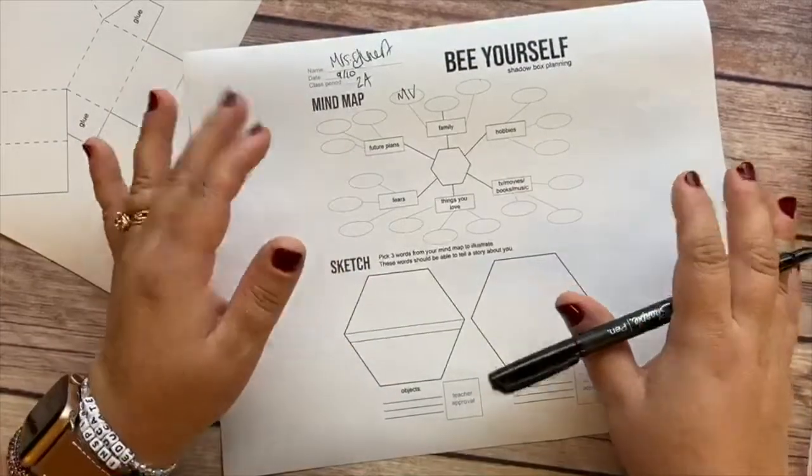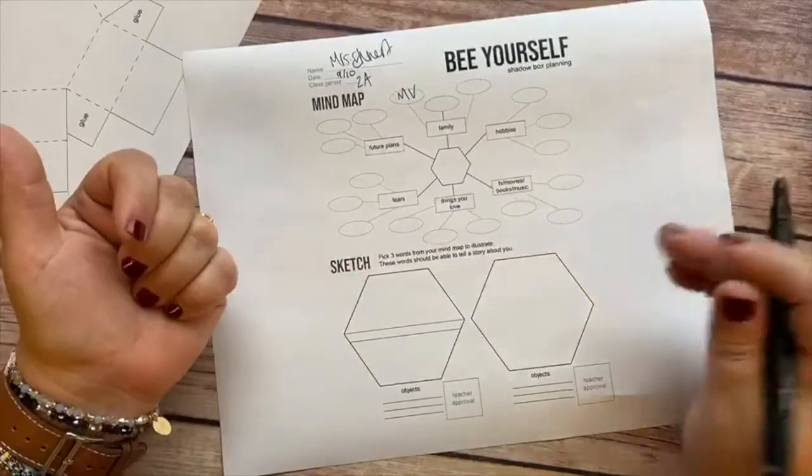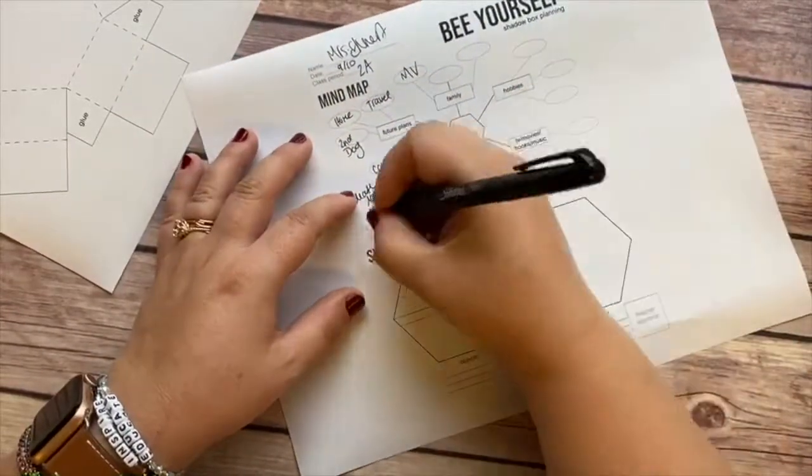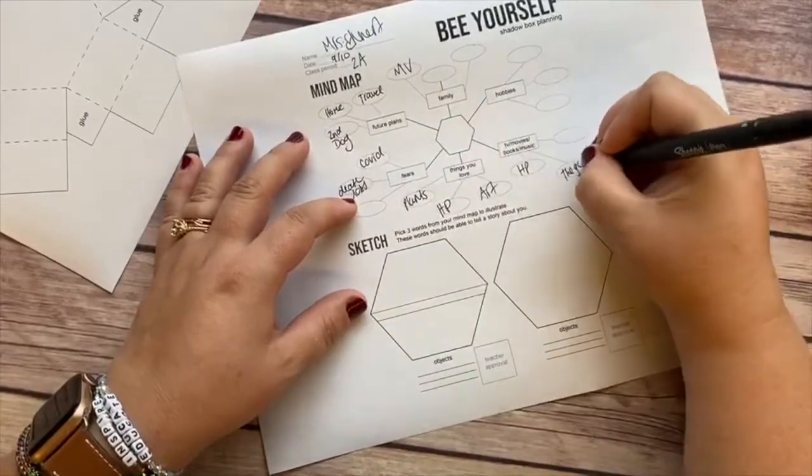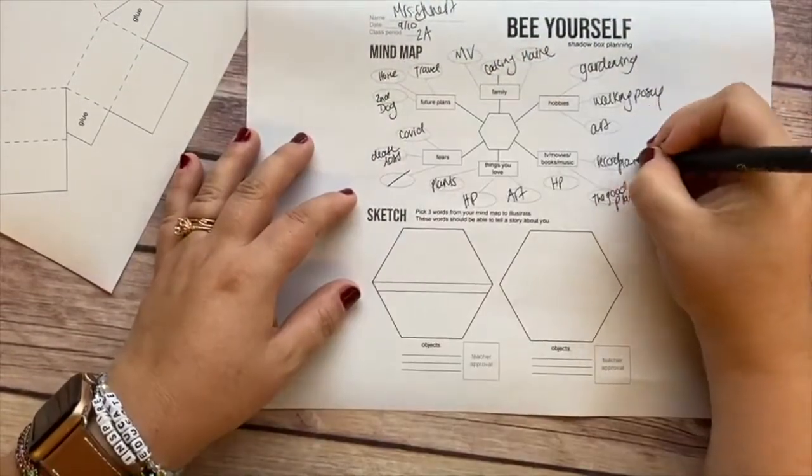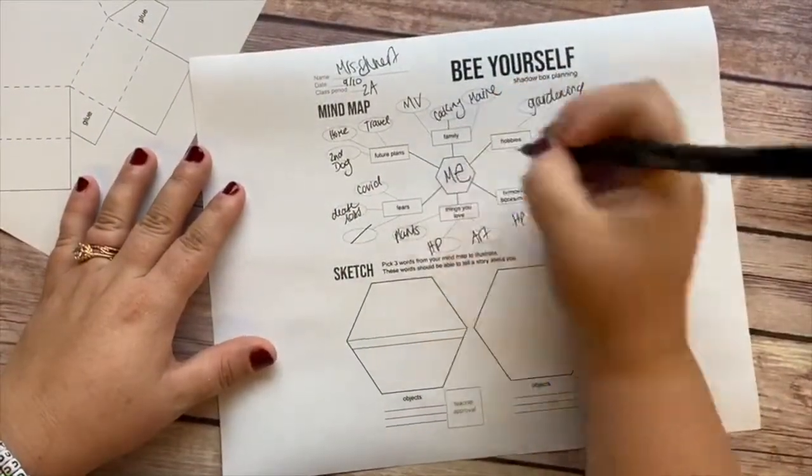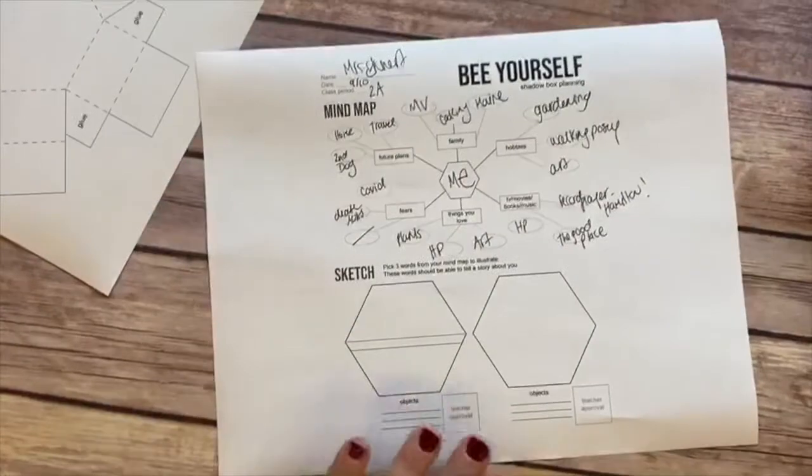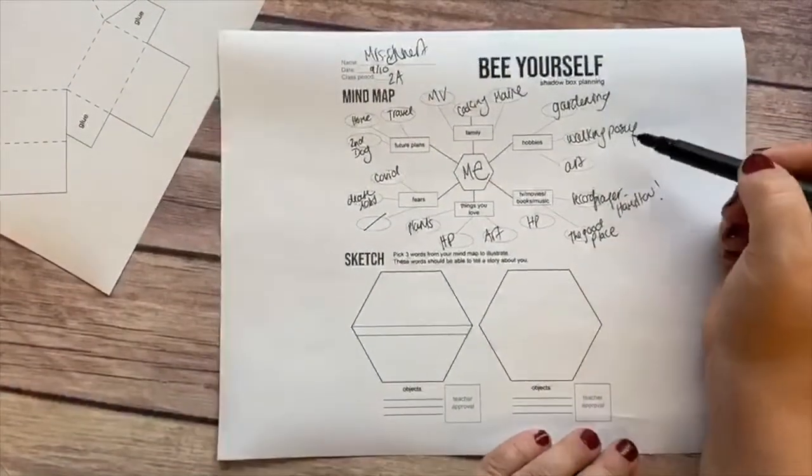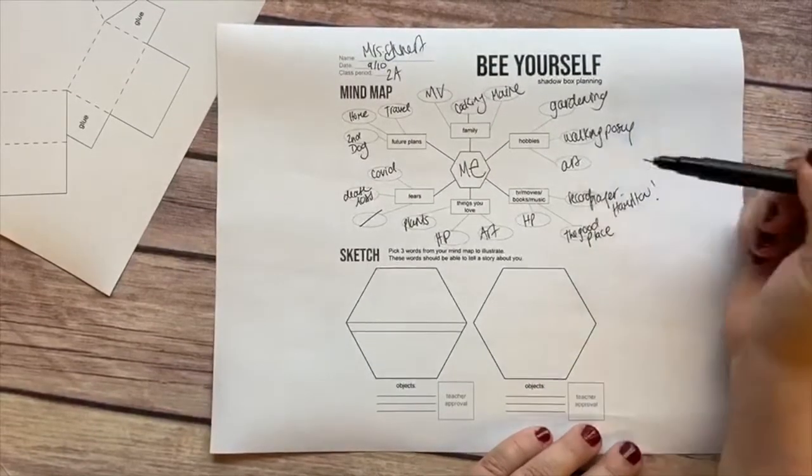So I filled out my mind map. This is me at the center and I included a couple different things. You'll see for hobbies I love to garden, I love taking my dog Posey on a walk, and then I love art.